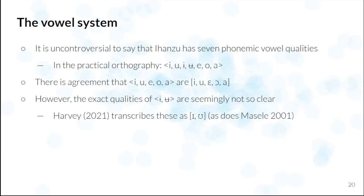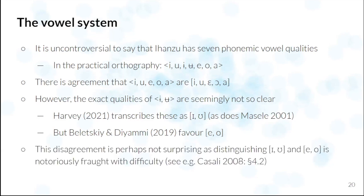So, for example, Andrew, in the talk I mentioned before, transcribes it as E and U, as does Masele. But in the sketch, Baletskin-Diamy argued that E and O should be used instead. And this disagreement is really not surprising, given previous observations that distinguishing these vowels is kind of fraught with difficulty, especially in the context of African languages with tongue root harmony of some kind or another.